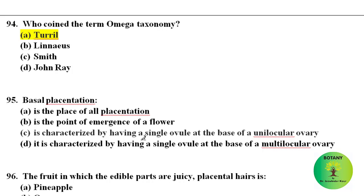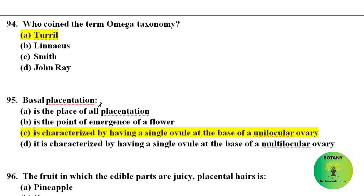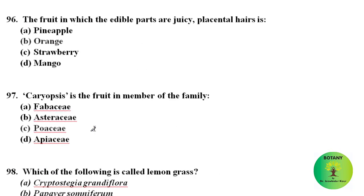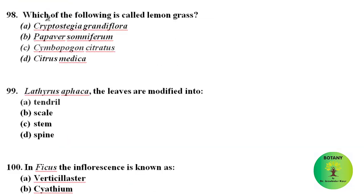Basal placentation is characterized by having a single ovule at the base of a unilocular ovary, and this is present in family Asteraceae. The fruit in which the edible parts are juicy placental hairs is the orange. Caryopsis is the fruit type in family Poaceae. Lemongrass has the scientific name Cymbopogon citratus and belongs to family Poaceae.